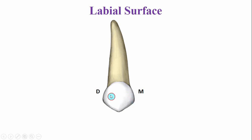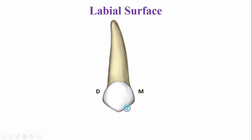The crown margins overhang the root surface, so the crown margins are outside the root surface. This is the mesial cuspal slope, and this is the distal cuspal slope. The mesial cuspal slope is usually larger compared to the distal cuspal slope. This is opposite in the permanent dentition, where the mesial cuspal slope is shorter and the distal cuspal slope is larger.